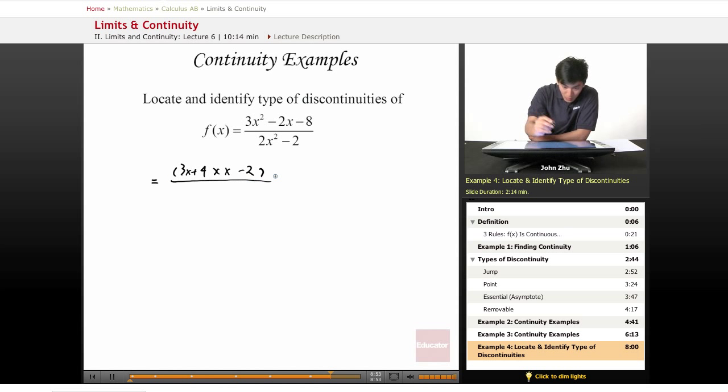And the bottom, we can pull out a 2 to make it x squared minus 1. And we notice that x squared minus 1 can be further factored. So 3x plus 4, x minus 2, over 2 times x plus 1 times x minus 1.